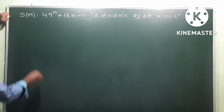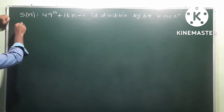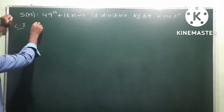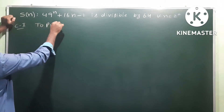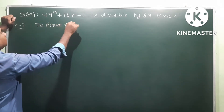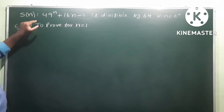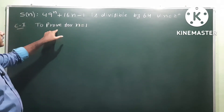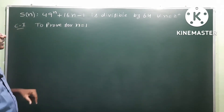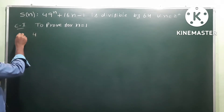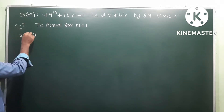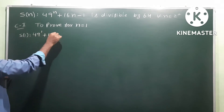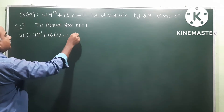Mathematical induction is a three-step procedure. Case 1: We prove the statement for n = 1. So the statement S(n) is: 64 divides 49^n + 16n - 1. For n = 1, S(1) gives us 49^1 + 16(1) - 1.